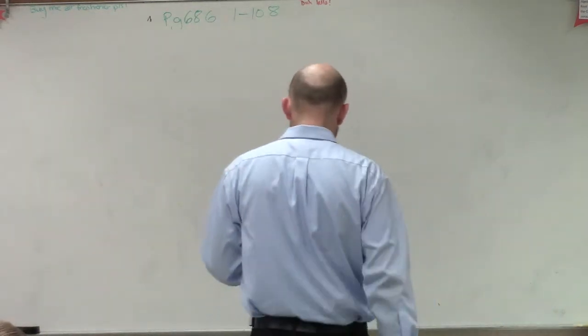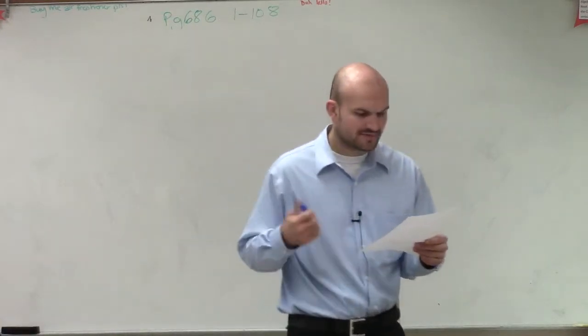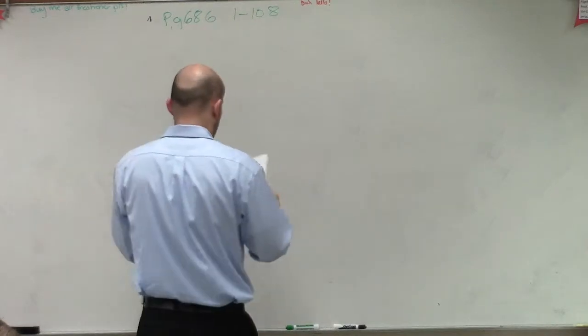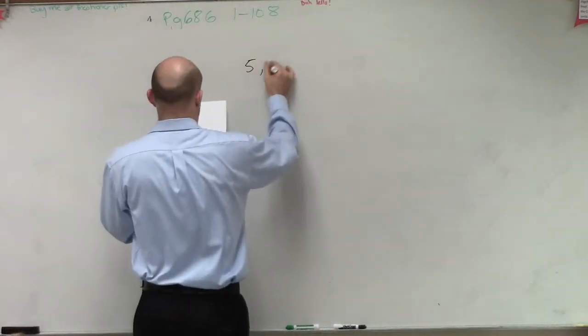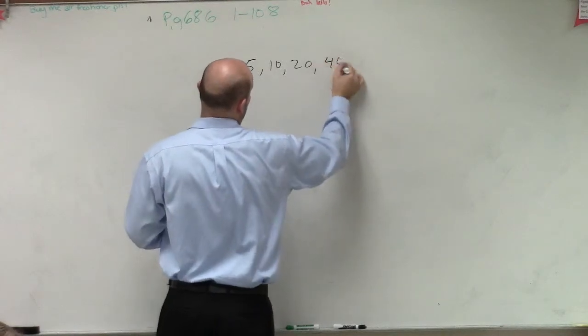So problem 39 says: name the type of series and find the next term of 5, 10, 20, 40. So we have 5, 10, 20, and then 40.